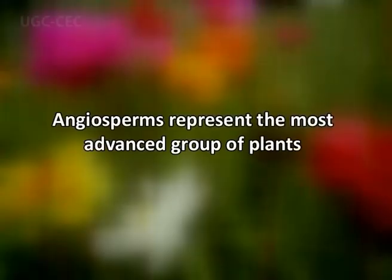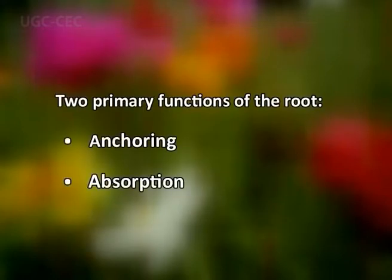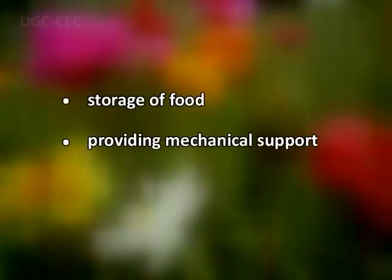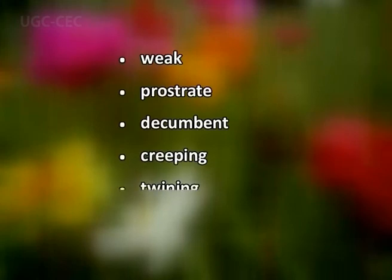Angiosperms represent the most advanced group of plants. The plant body consists of an underground root system and an aerial shoot system. The shoot system contains vegetative and reproductive parts. The root serves two primary functions: anchoring and absorption, and may show modifications for food storage or mechanical support. The main axis of the shoot system is the stem — the ascending portion bearing distinct nodes and internodes — and branches, leaves, and buds arise at the nodal regions. The stem may be erect, weak, prostrate, decumbent, creeping, twining, or climbing.